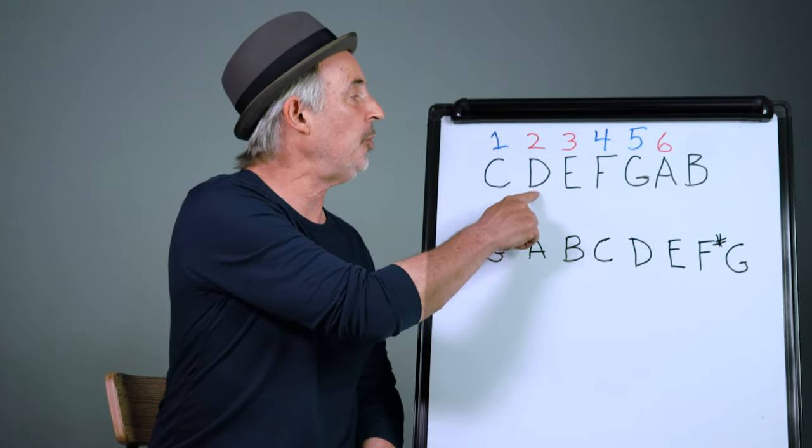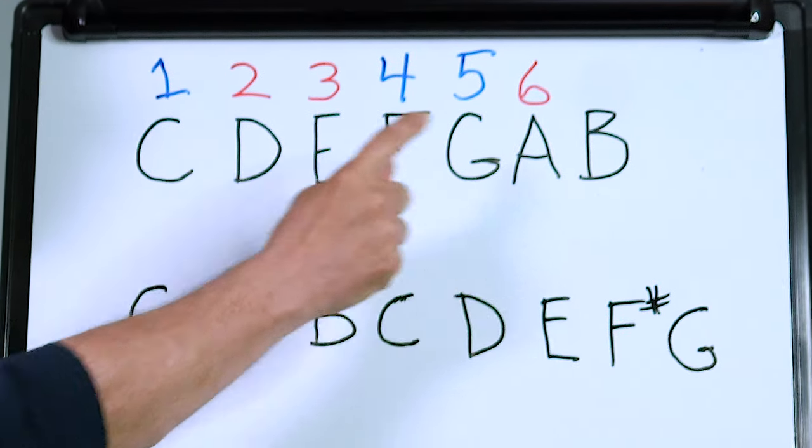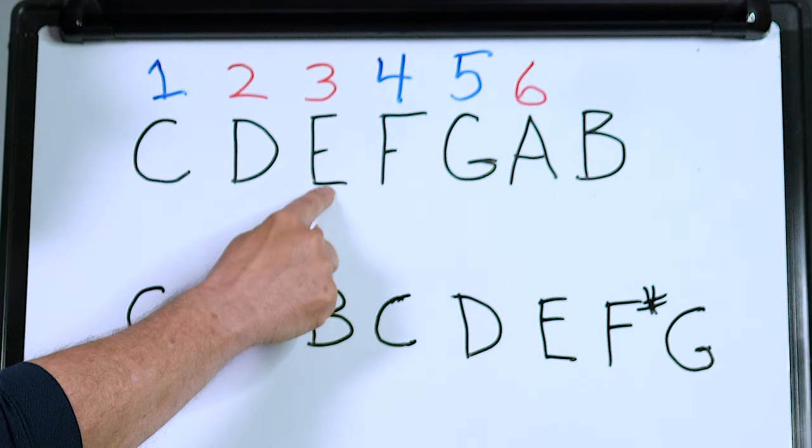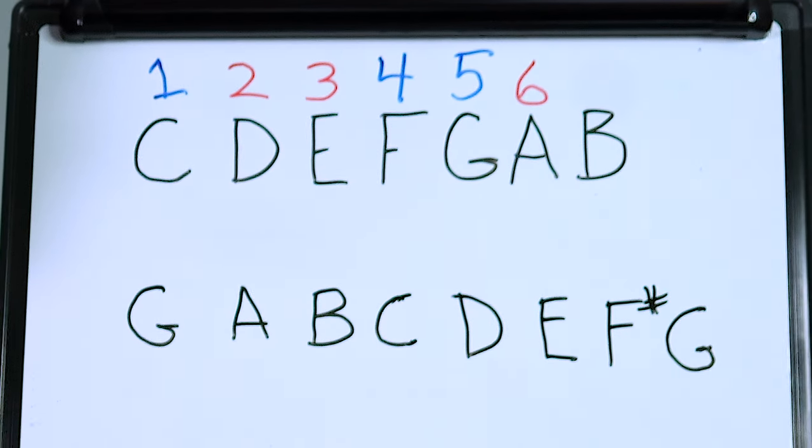Let's go to the two three and six chords. Each of these will end up being a minor chord, so this will be D minor in the key of C, E minor in the key of C, and the six, the A, will be A minor in the key of C.